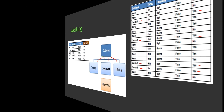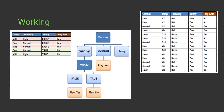Now let's talk about the sunny branch. Taking the sunny data points, we have entries with temperatures: mild, mild, cool, cool, mild, mild. It is clearly seen that if wind is false, then a person can play golf, and if wind is true, then the person cannot play. So sunny plus wind false means yes; otherwise no. This is how we prepare a decision tree — we have reached a conclusion for overcast and sunny.